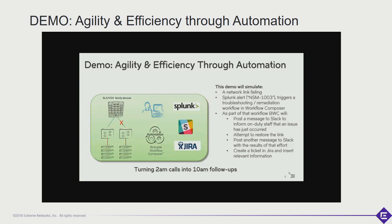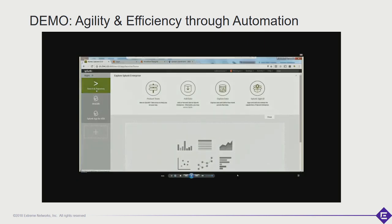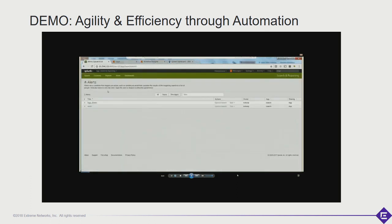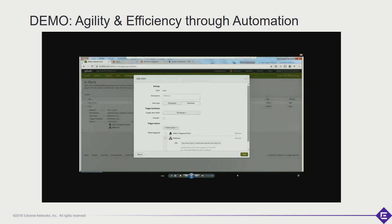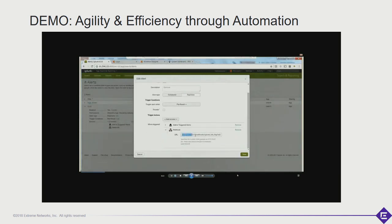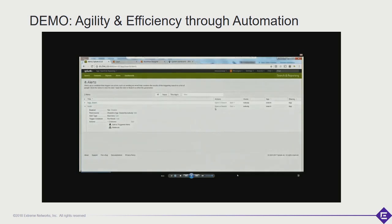This demo shows an outage where a Splunk alert triggers a remediation workflow via webhook. The event is a network link failure. The workflow will post messages to Slack, attempt to fix the issue, and lastly create a ticket in Jira. Everything starts with Splunk — we've created an alert called 'Test T', which is enabled. Here you can see the webhook URL information used to initiate the automated remediation.